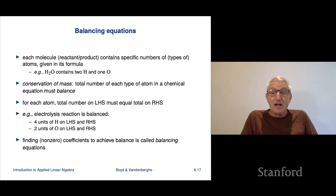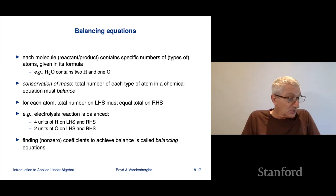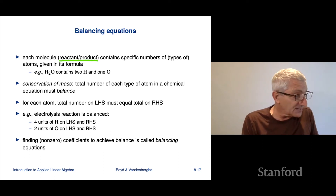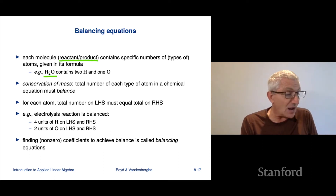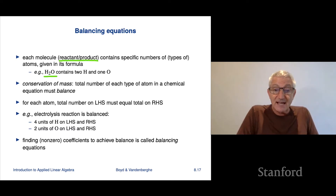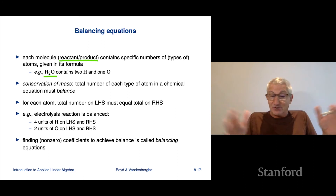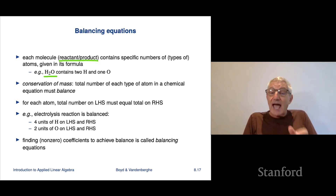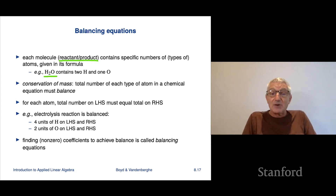Chemical equations must be balanced, which corresponds to conservation of mass for the different types of atoms. Each molecule contains specific numbers of atoms given by its chemical formula — for example, each water molecule contains 2 hydrogen atoms and 1 oxygen atom. Conservation of mass says that the total number of each type of atom among the reactants must exactly equal the total among the products. This means the equation must balance.